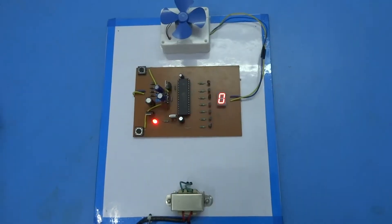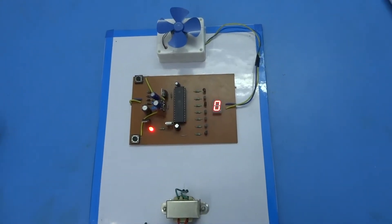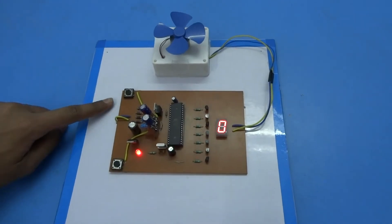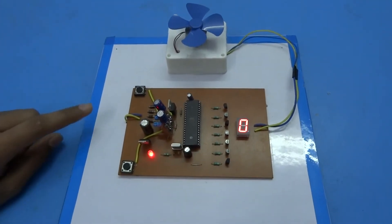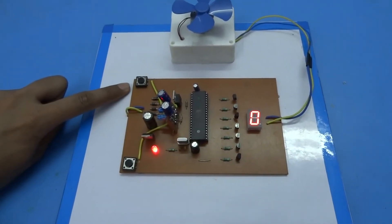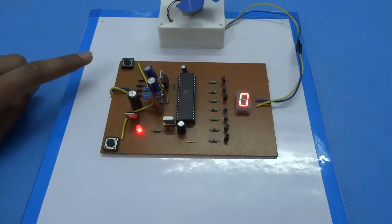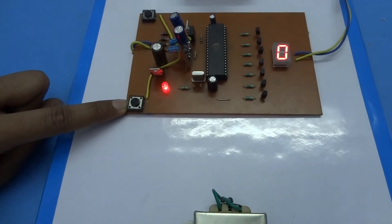Now let us start with the working of the project. In this project we are using two switches in which one is used to increase the speed while another is used to decrease the speed.